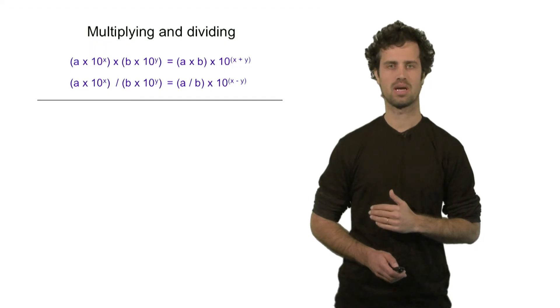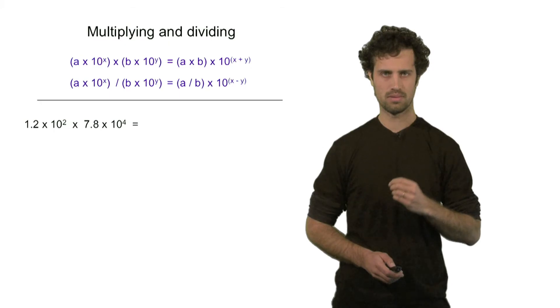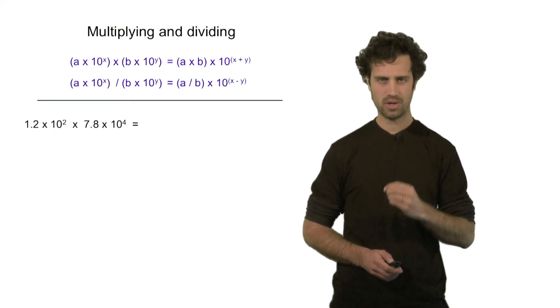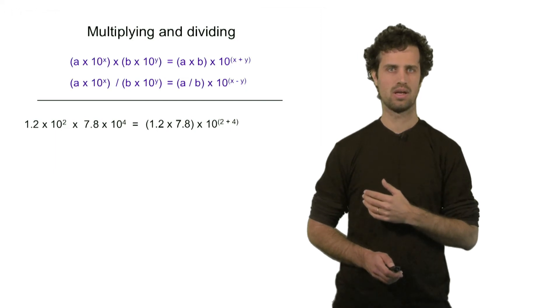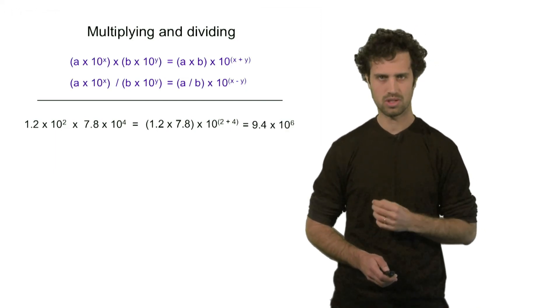Here are a couple of examples. 1.2 times 10 to the second, multiplied by 7.8 times 10 to the fourth. If you multiply these two numbers, you multiply 1.2 by 7.8, and then in terms of the powers, you add up 2 and 4, which is 6. So the answer is 9.4 times 10 to the sixth.